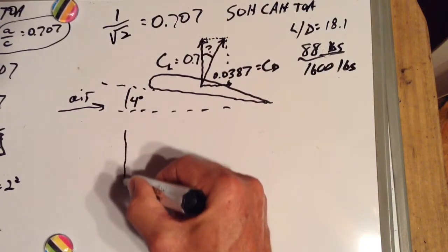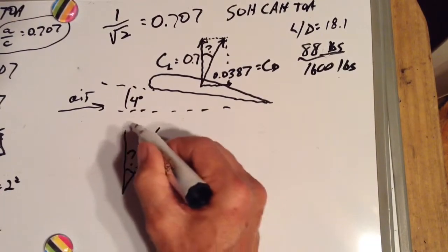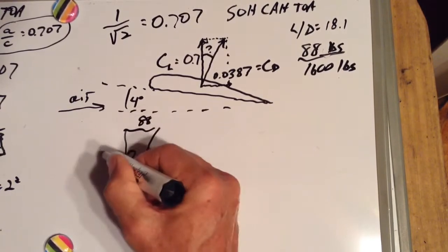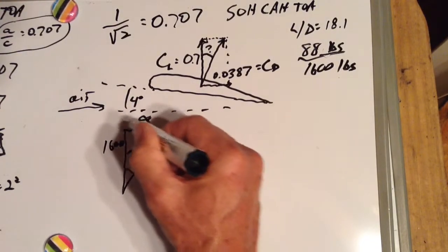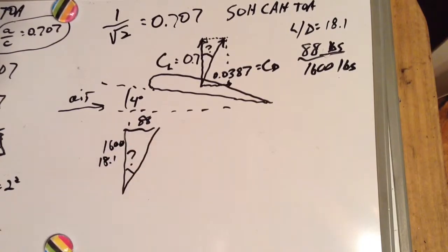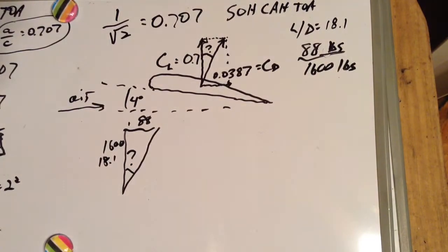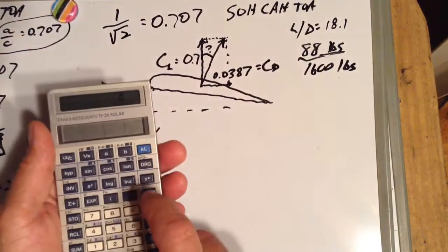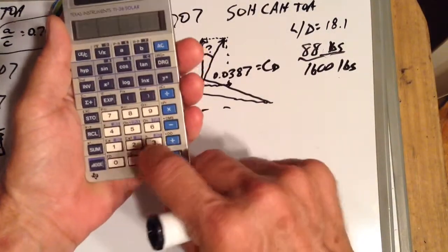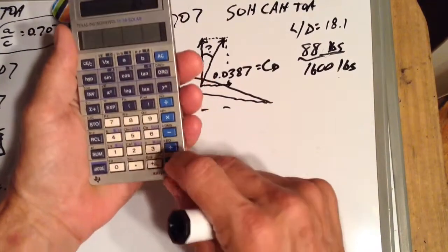We can draw this unknown angle here. We can call this 88 and call this 1600, or we can call this 0.0387 and call this 0.7. Doesn't matter. We'll get the same answer for our angle when we punch it into the calculator. So let's use what the chart gives us.